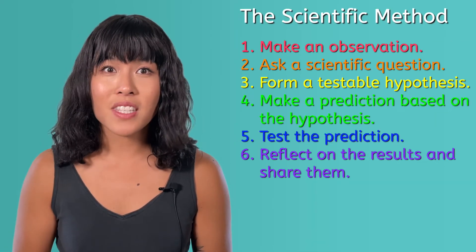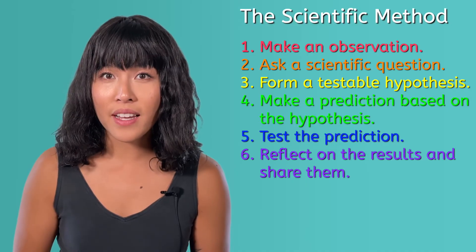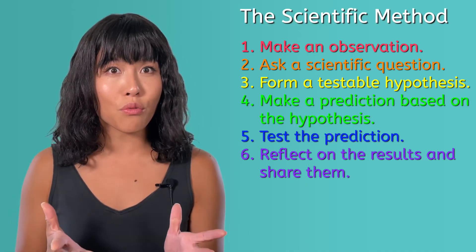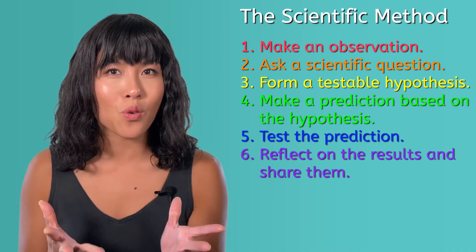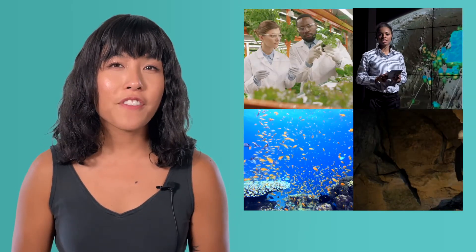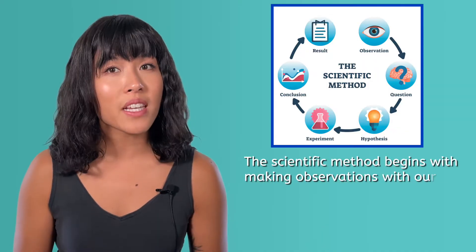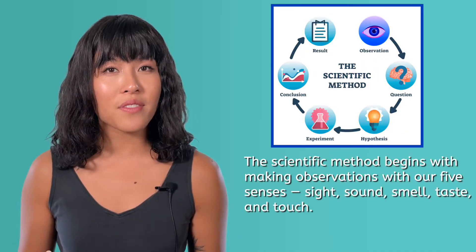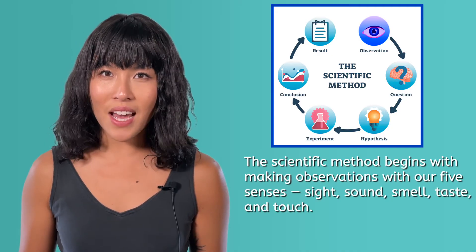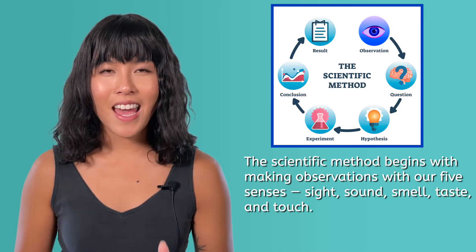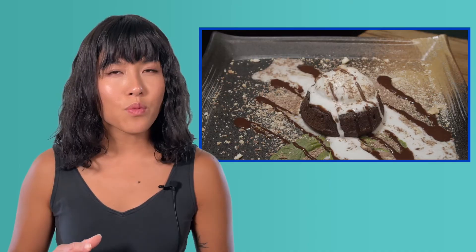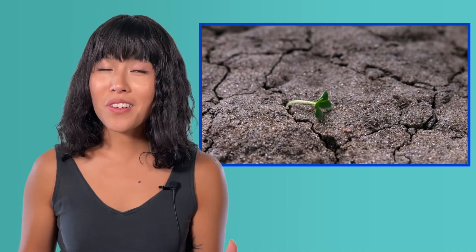Even though the steps of the scientific method are simplified, collectively they give scientists a model to work through when trying to understand the world. The basic scientific method begins with making observations with our five senses: sight, sound, smell, taste, and touch. In other words, you notice something such as the air temperature during the winter, what happens when ice cream melts, or how your plants behave when you forget to water them.